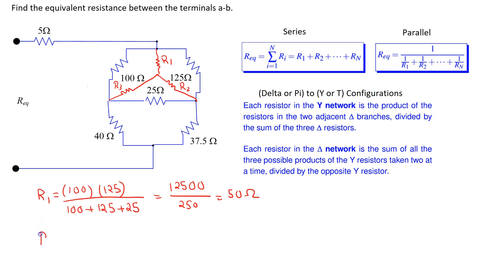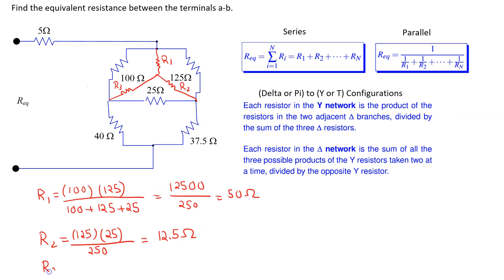Similarly, R2 is given by the product of the two adjacent delta resistors, 125 times 25, divided by the sum of the delta resistors which is 250. This comes out to 12.5 ohms. Finally, R3 is given by 100 times 25 divided by 250, which comes out to 10 ohms.